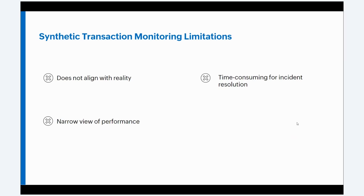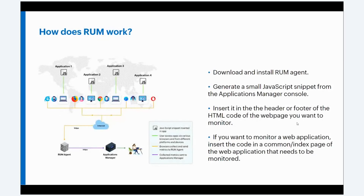This is why we need real user monitoring. To facilitate data collection and reporting, RUM's remote monitoring agent is deployed in the server where the web application is hosted. Following that, a small JavaScript snippet generated by Applications Manager is placed in the header or footer of the HTML code of the web application that you want to track. Upon loading, the JavaScript snippet collects performance data and constantly transmits it to the RUM agent. The RUM agent acts as a liaison between this JavaScript code and Applications Manager's web client, which depicts the captured data.